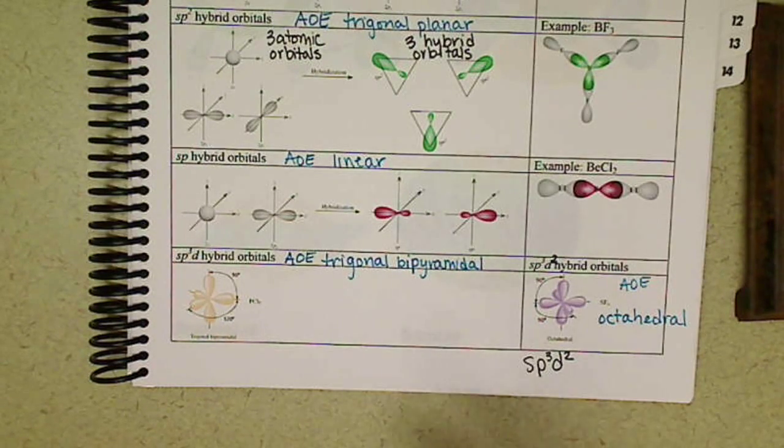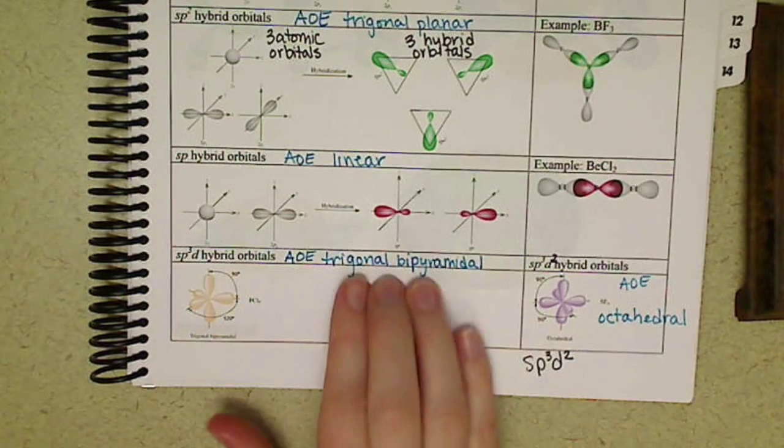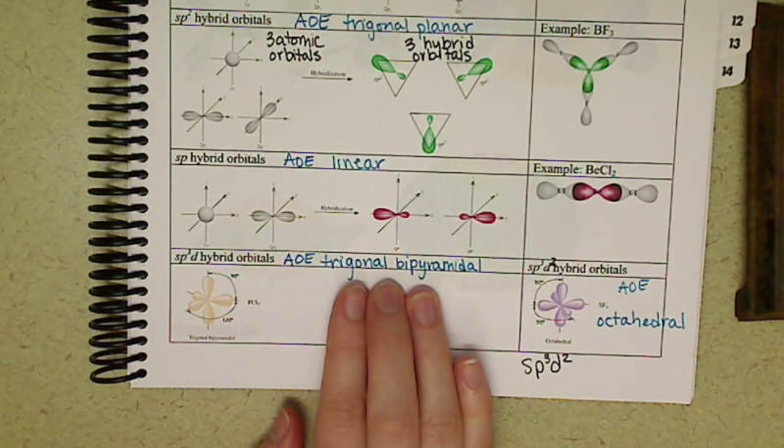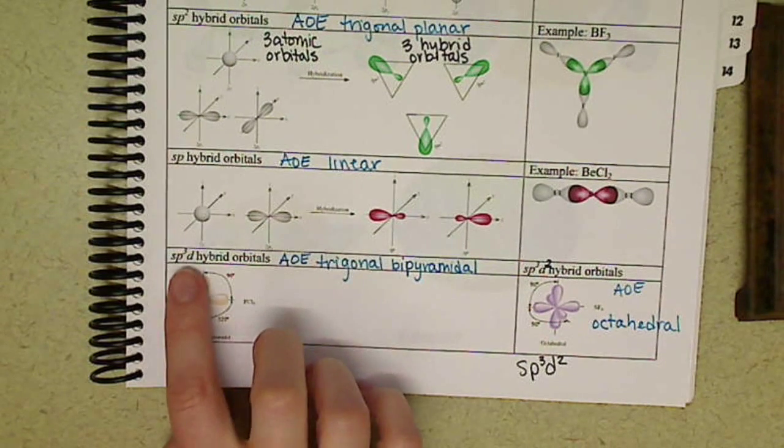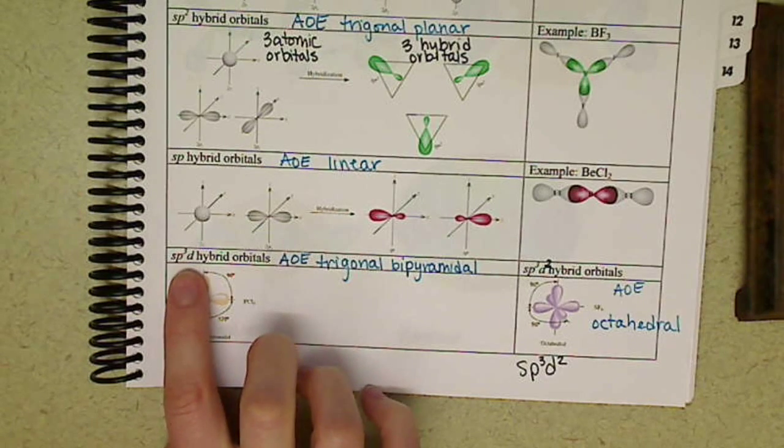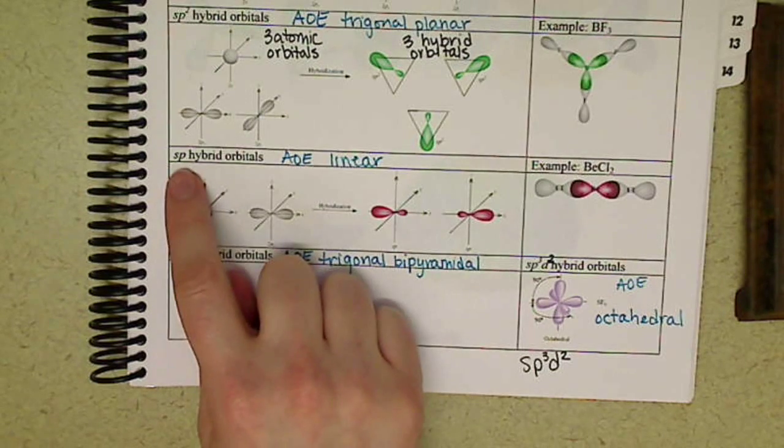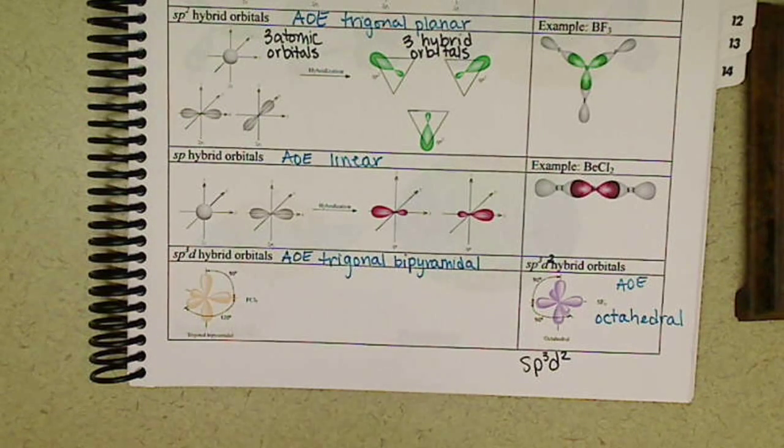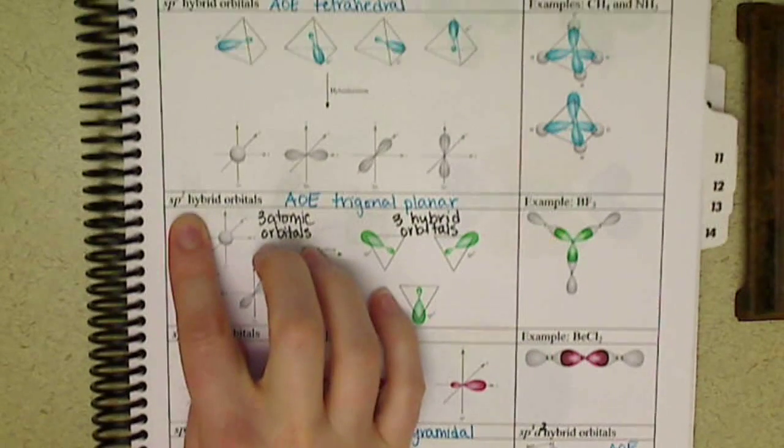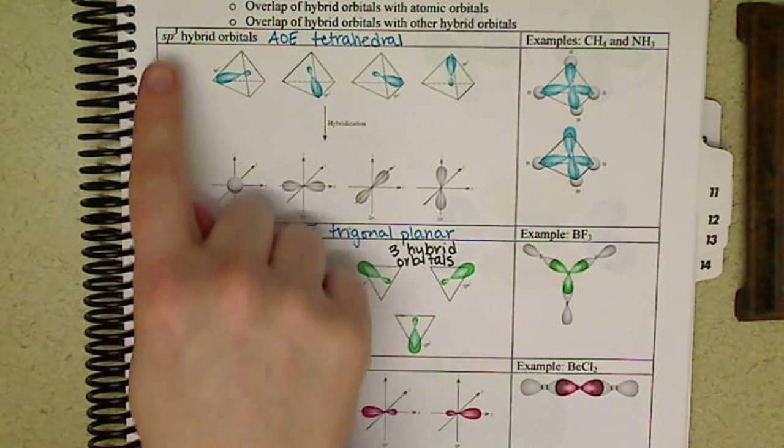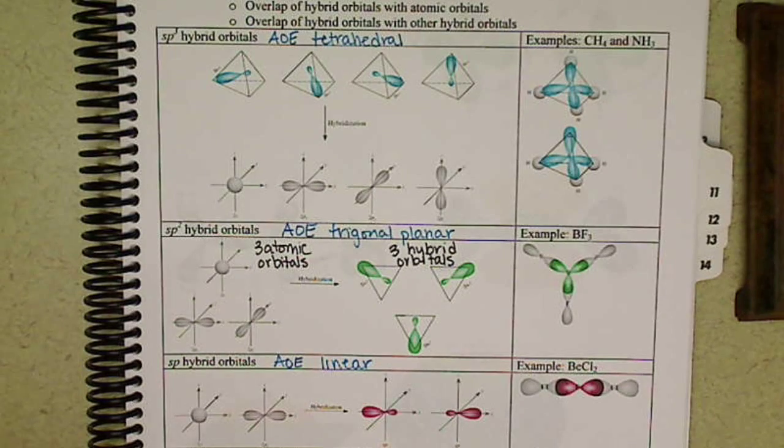So any atom in our structures, if they have a trigonal bipyramidal arrangement of electrons, then they have SP3D hybrid orbitals. If they're octahedral, they're going to have SP3D2. If they're linear, SP hybridization. If they're trigonal planar, SP2, and tetrahedral is SP3. So the hybrid orbitals allow us to actually prove the bond angles in our arrangement of electrons.